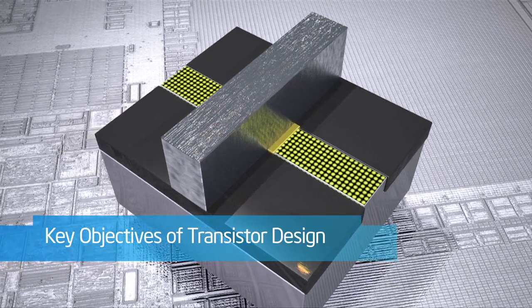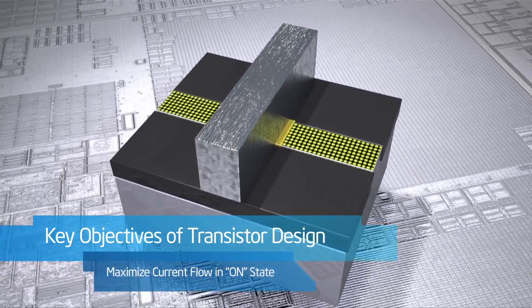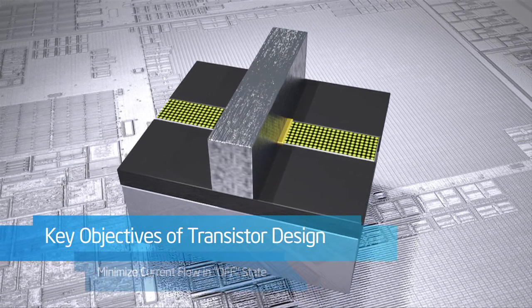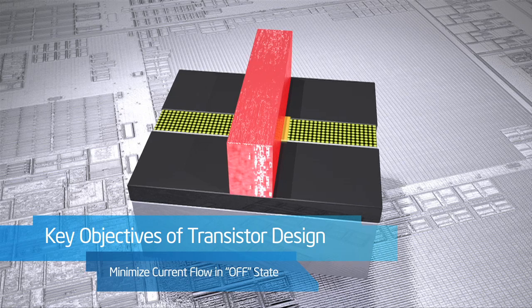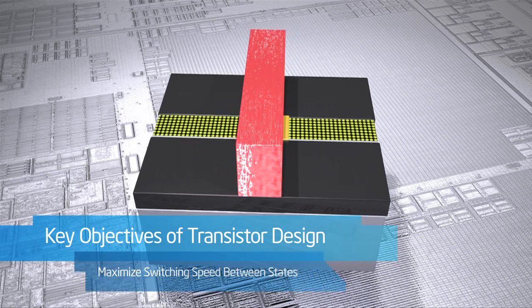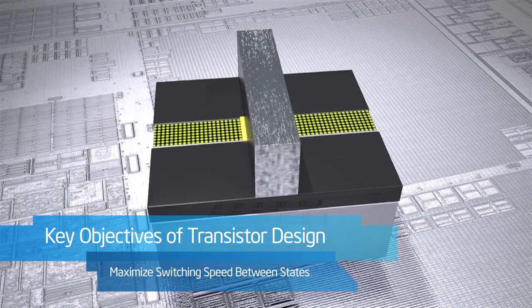Some key objectives in transistor design are to have as much current flowing as possible when in the on state for performance, to have as close to zero current flowing when it is in the off state to minimize power usage, and to switch very quickly between the two states, again, for performance.